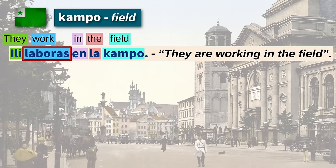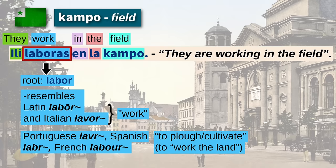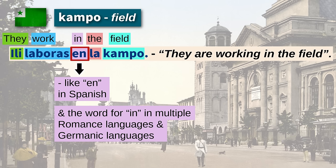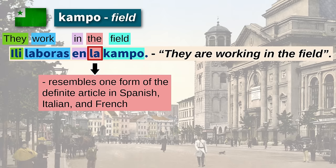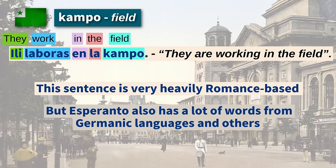Let's see that word in a sentence: "Ili laboras en la kampo" — They are working in the field. "Ili" (they) is similar to Latin and its Romance descendants. "Laboras" (work) resembles the word for work in Latin and Italian, and the verb for cultivating the land in Portuguese, Spanish, and French — and in English we have the word labor. "En" resembles "in" across multiple Romance and Germanic languages. "La" is the definite article, like Spanish, Italian, and French. Note that Esperanto doesn't have an indefinite article like "a" in English. This sentence is heavily Romance-based, but Esperanto also has many words from Germanic languages and others.